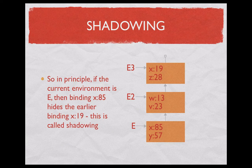In E2, it is 19. In E3, it is 19. But in E, this shadowing phenomenon happens and the x 85 takes priority. And in that way, we don't see x bound to 19.